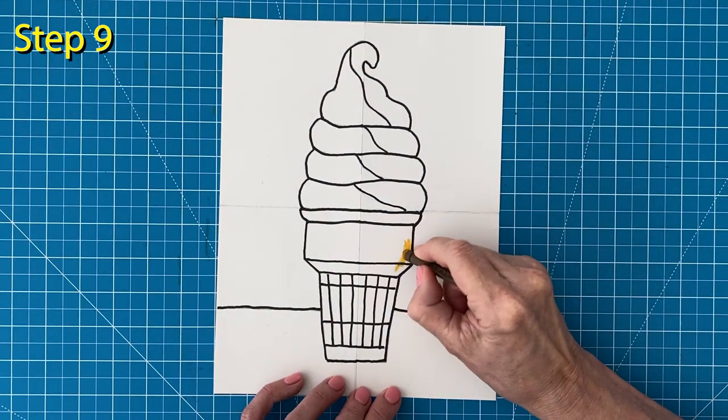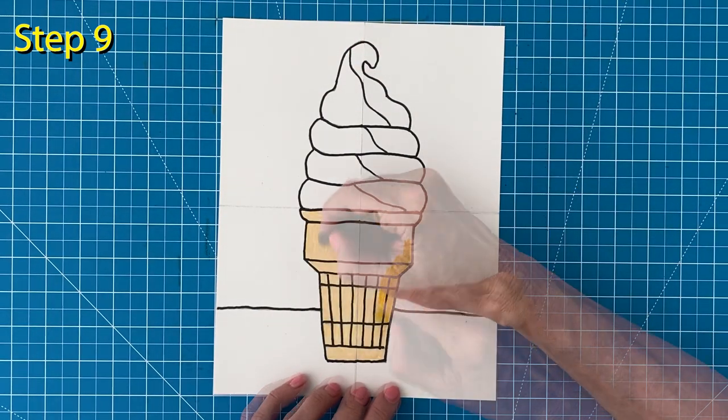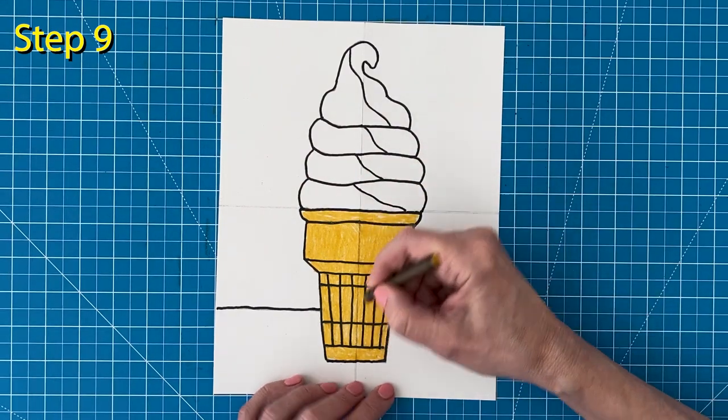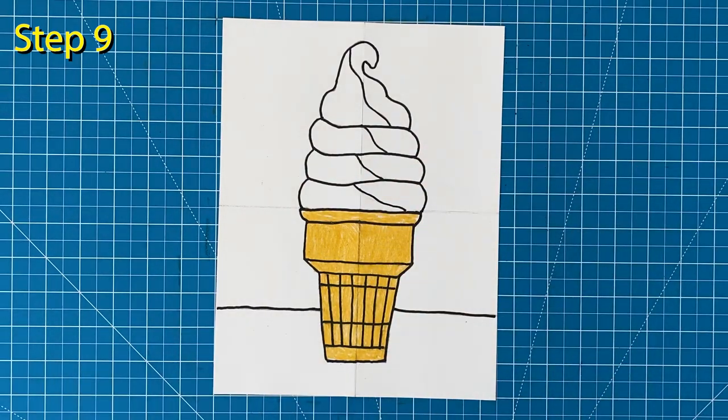To begin my coloring I'm going to use a gold for the cone and remember to press hard so that you get a lot of bright crayon color.